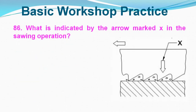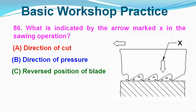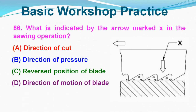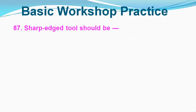Question No. 86: What is indicated by the arrow marked X in the showing operation? Option A: Direction of cut, Option B: Direction of pressure, Option C: Reverse position of blade, Option D: Direction of motion of blade. Correct answer is Option B, Direction of pressure.